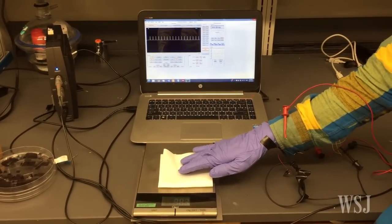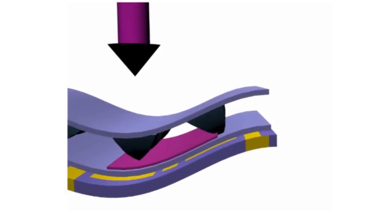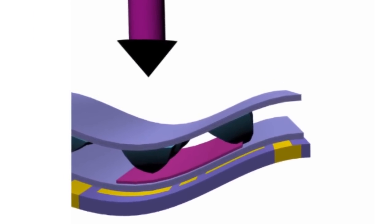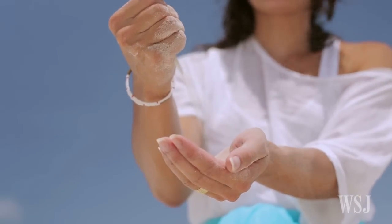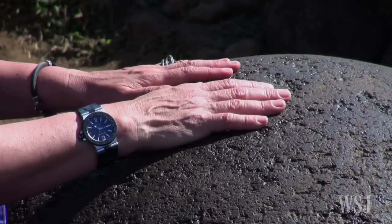But the technology is still in a very early stage. Pressure is all that the artificial skin can sense. The scientists plan to continue their research to mimic other sensing functions of the human skin, including the ability to feel texture and detect temperature.